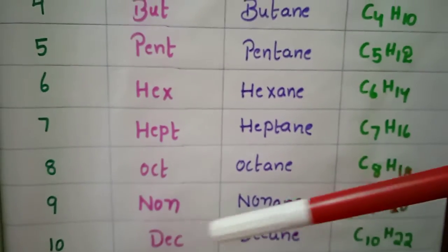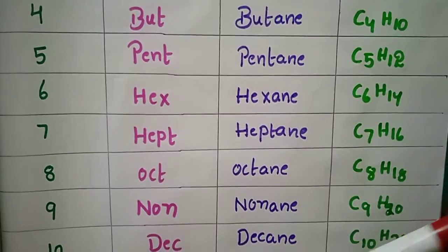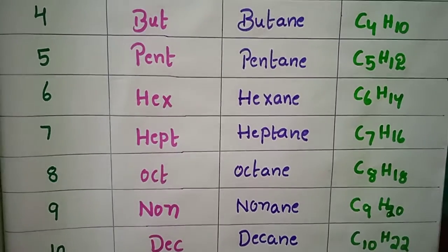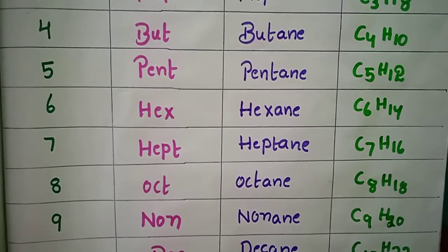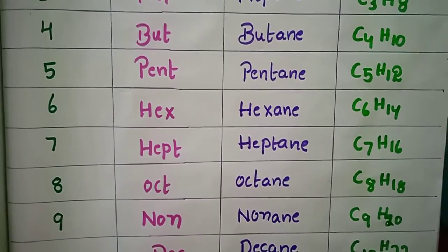For 10 carbons, the word root is 'dec' — decane, formula C10H22. Have a good day.